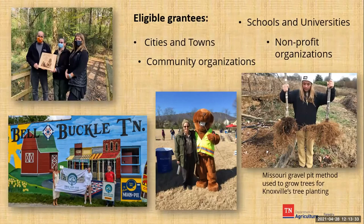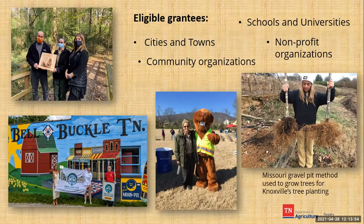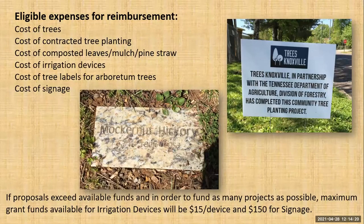All approved expenses will only be reimbursed when the project invoices are sent to the Division. The invoices must have already been paid and proof of payment is required before we reimburse. Eligible grantees are cities and towns, community organizations, schools and universities, and nonprofit organizations. Some examples of past grantees include White Station High School Partners in Education in Memphis, the Garden Club of Nashville, and Ebenezer United Methodist Church in Knoxville.